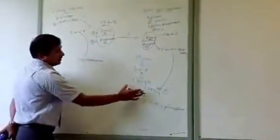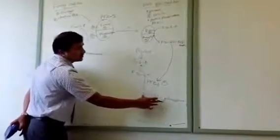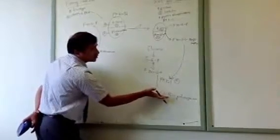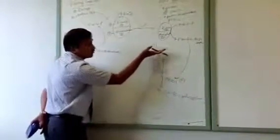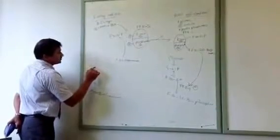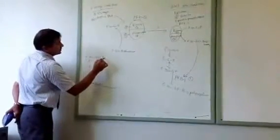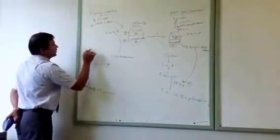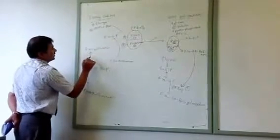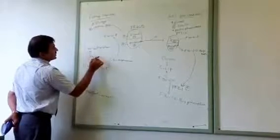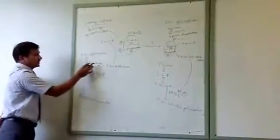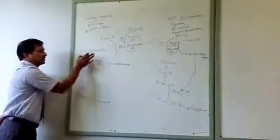One irreversible reaction is the conversion of fructose 6 phosphate to fructose 1,6 bisphosphate in glycolysis — a unidirectional reaction. To take fructose 1,6 bisphosphate back to fructose 6 phosphate for glucose production, this reaction must be reversed. The enzyme to do that is fructose 1,6 bisphosphatase, which converts fructose 1,6 bisphosphate back to fructose 6 phosphate.